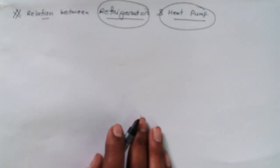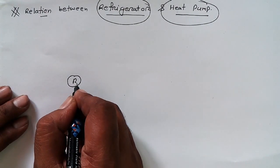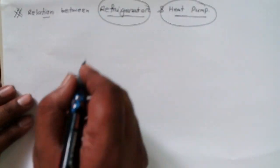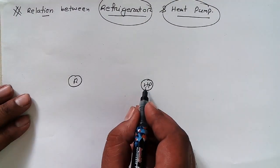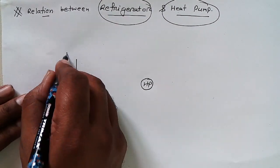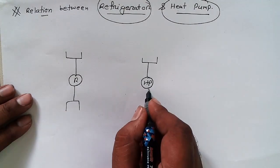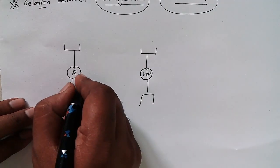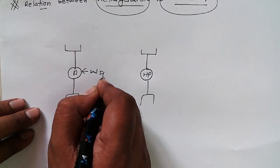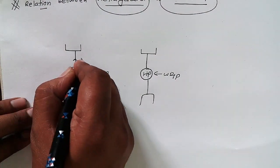I hope you know what a refrigerator is and what a heat pump is. Let's discuss about it. Suppose that there is a refrigerator — we are denoting refrigerator as R and heat pump as HP, H for heat, P for pump. The diagram for both refrigerator and heat pump are the same, but what is the difference? For both devices we have to give work input.